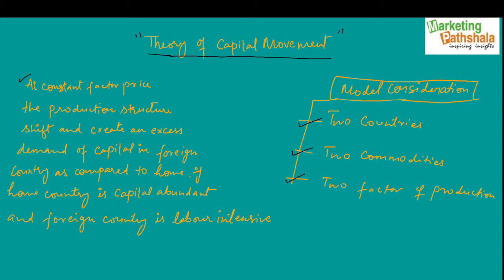In this theory — the theory of capital movement — it is considered that there exist only two countries. This is an assumption. In real life, we have a large number of countries, but for the purpose of explaining how capital moves, this theory considers only two countries.